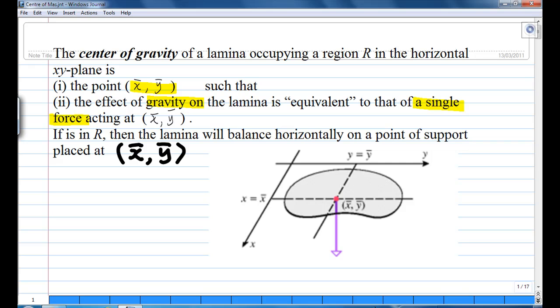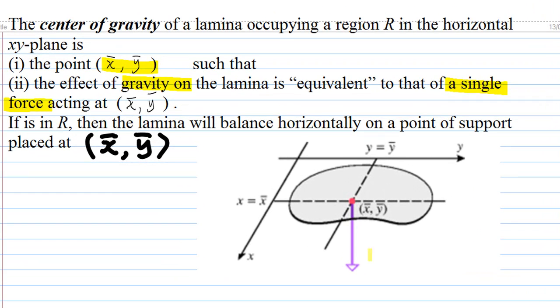If this point is inside the region R, then the lamina will be balanced horizontally on a point of support placed at the center of gravity, as shown in this diagram.